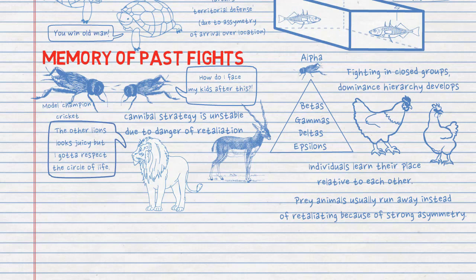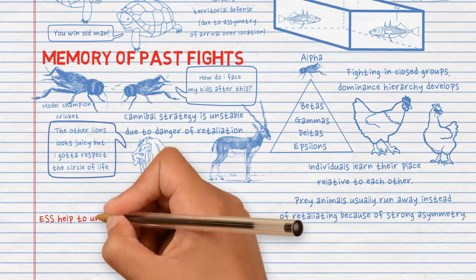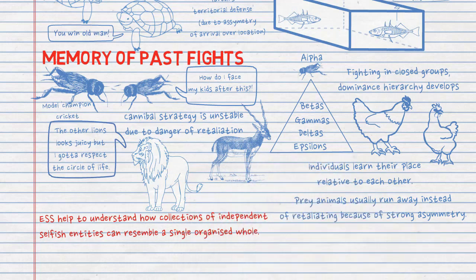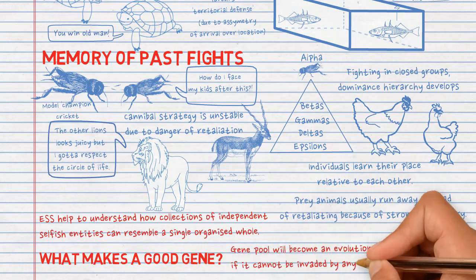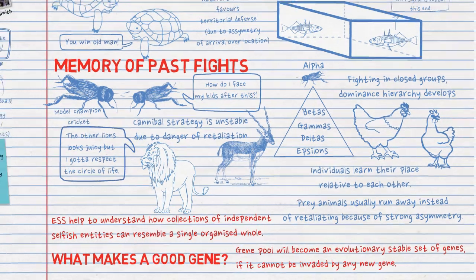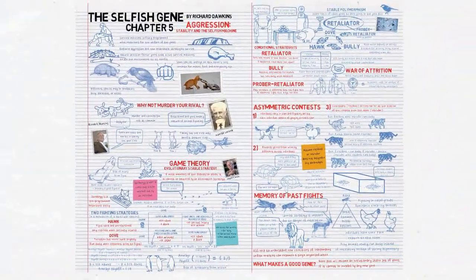So this helps explain why we don't see lions hunting other lions. A cannibal strategy is unstable because there is too much danger of retaliation, as seen in the hawk strategy. So why don't antelopes fight back at lions instead of running? Prey animals usually run away instead of retaliating, probably because there is a strong asymmetry in the contest — they have become proficient at running such that a mutant antelope that stands and fights would not be very successful. Dawkins warns against social group thinking when analyzing animal behavior because of hidden and flawed group selectionist assumptions. In conclusion, Dawkins uses this to answer the question of what makes a good gene. The gene pool will become an evolutionary stable set of genes if it cannot be invaded by any new gene. Genes that arise by mutation, reassortment, or immigration are quickly penalized by natural selection. If a new gene succeeds in invading the gene pool, a new evolutionary stable set is established. Hence, progressive evolution is like a series of discrete steps.